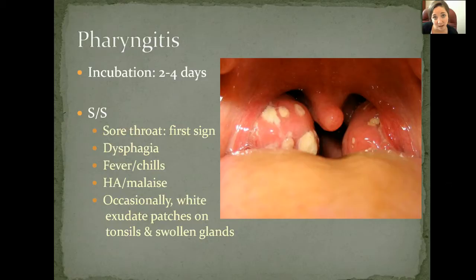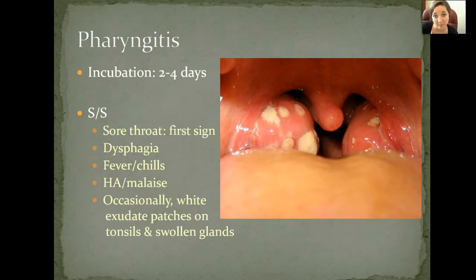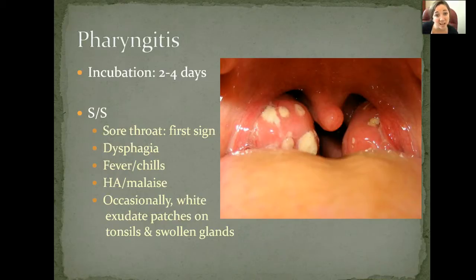Around that time you may also notice fever and chills. The fever we are most concerned about is any time it's above 100.5 or 101 degrees. Any time you see a fever higher than that, it's cause for concern, and we really want to lower it to protect the brain, muscles, and other body systems. You're also probably going to notice a headache and some malaise, just because of the nature of an infection.